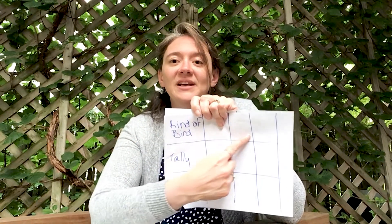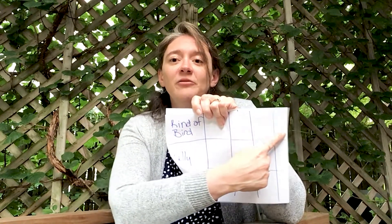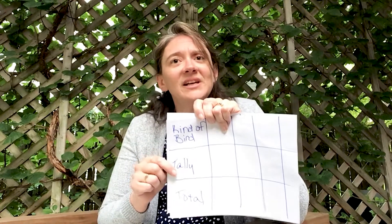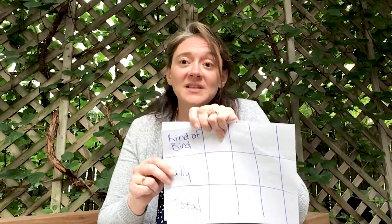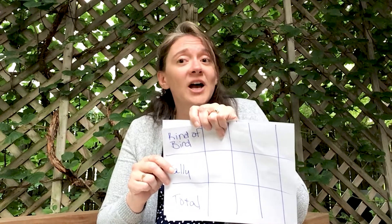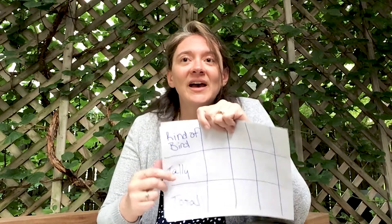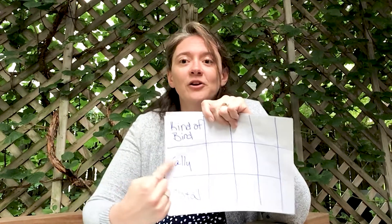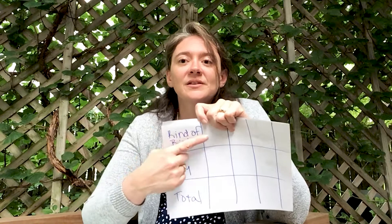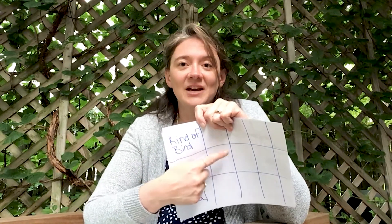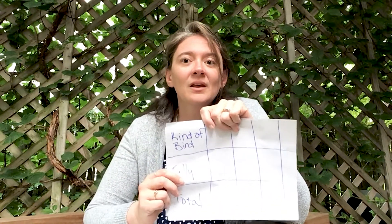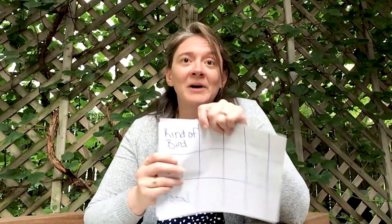Up here you're going to write each different kind of bird you see. If you don't know the name, that's okay — just write down what it looks like, or draw it. Then you're going to make your tally marks, making little lines each time you see that bird. At the end, we'll total them up. You can add more columns if you need to.